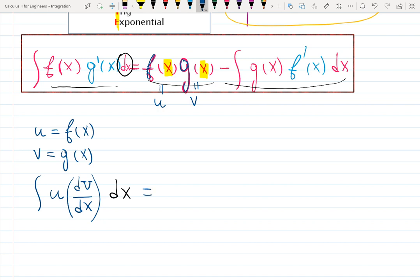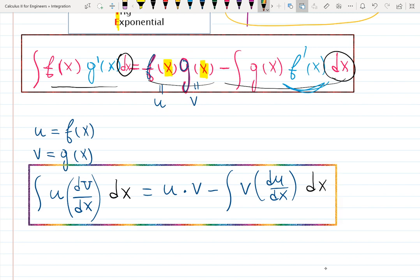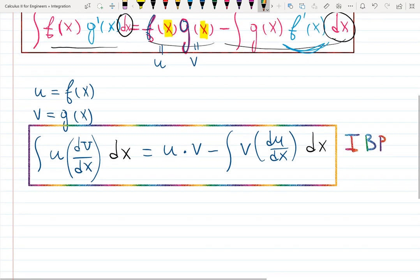Let me write it down: equals f is u, so that's u, g is v, so that's times v, minus integral g is v and then derivative of f with respect to x. f is u, so it's going to be du over dx. The integral has its own dx at the end. This is how my formula will look like if I substitute all the functions in the integration by parts formula.